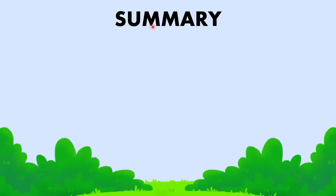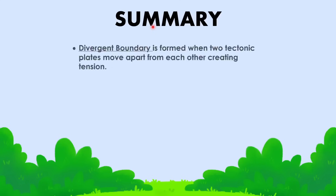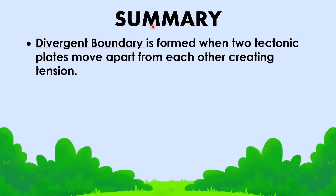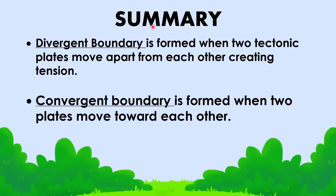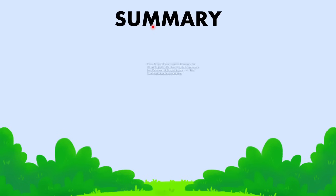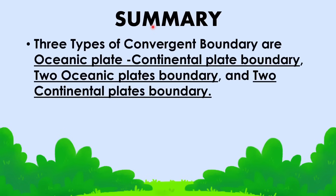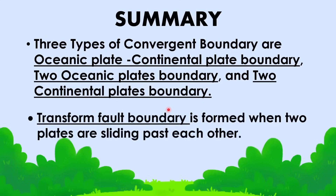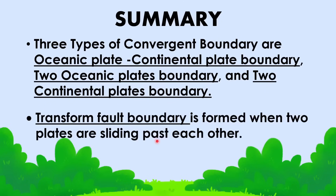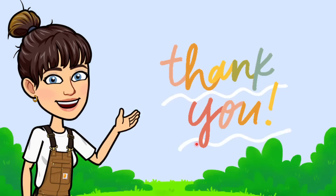Now let's sum up all of our discussion today. Divergent boundary is formed when two tectonic plates move apart from each other, creating tension. Convergent boundary is formed when two plates move toward each other, and we have three types: oceanic-continental plate boundary, two oceanic plates boundary, and two continental plates boundary. Lastly, we have transform fault boundary, which is formed when two plates are sliding past each other. And that's it for our lesson for today.